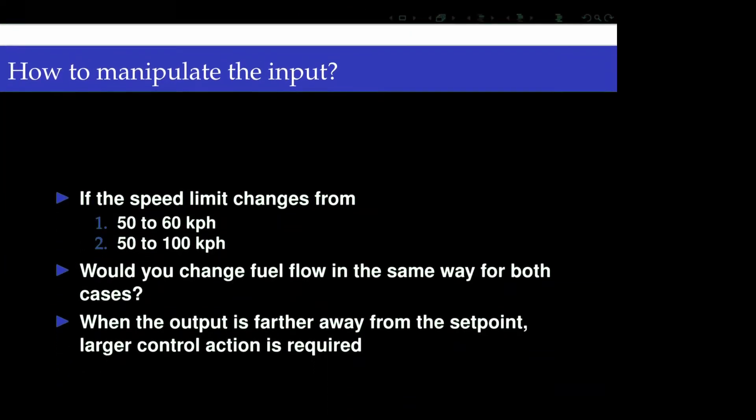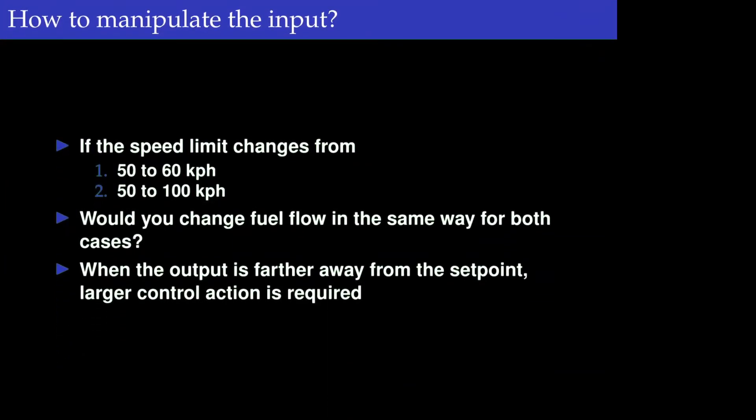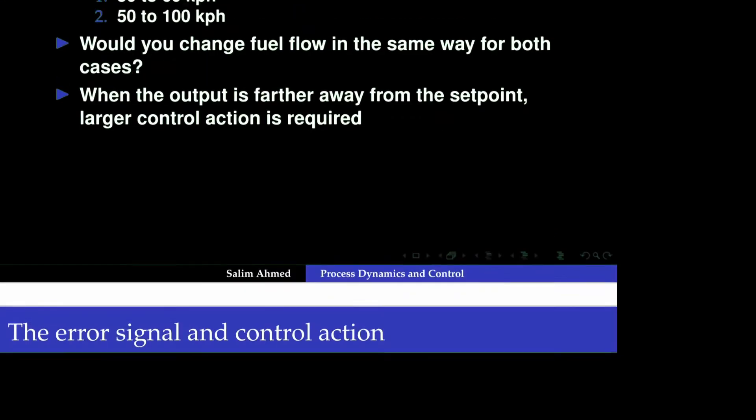How do we really manipulate the input signal? Think about a scenario where you are merging from a road to a highway and the speed limit goes from 50 to 100 km per hour. Another scenario is changing speed from 50 to 60 km per hour. Would you change the fuel flow the same way for both cases? Definitely not — you change the fuel flow according to the difference between the desired value and the current value. So when the output is further away from the set point, more control action is required. This is the basis for what is called proportional control.